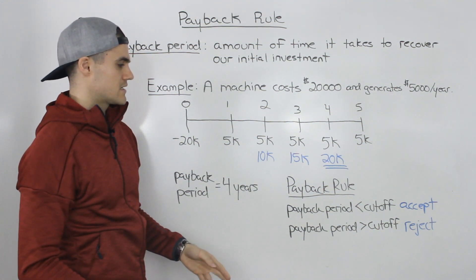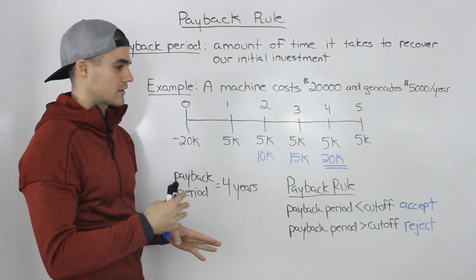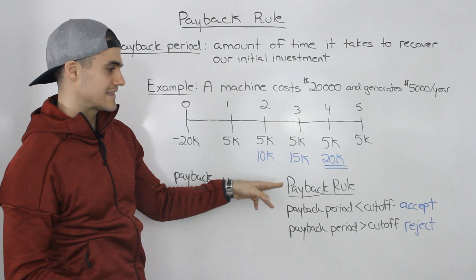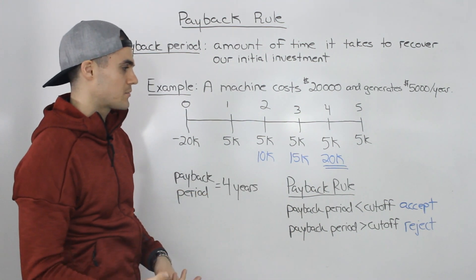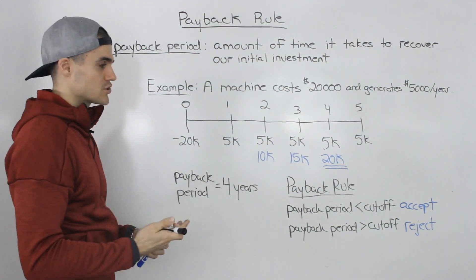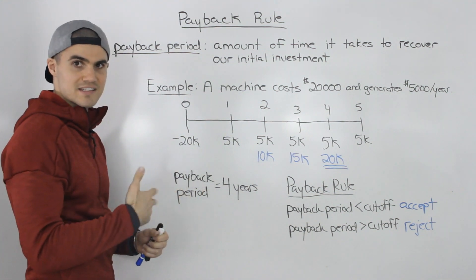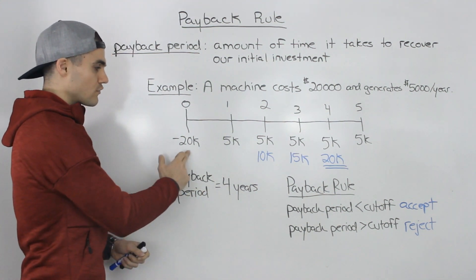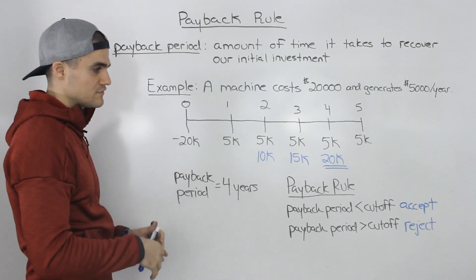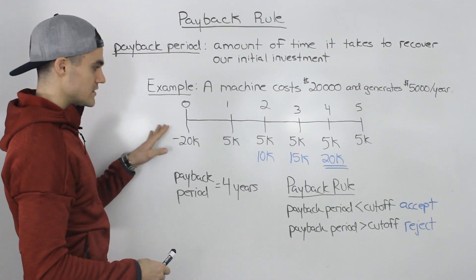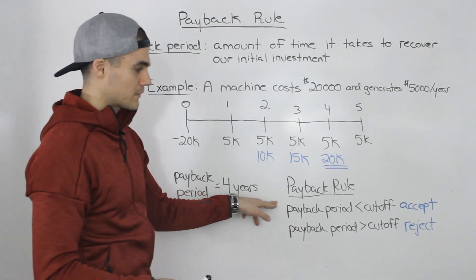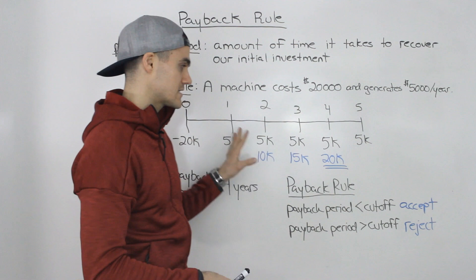The payback rule requires us to take the payback period and compare it to a cutoff the company has given. If the payback period is less than the cutoff, we accept the project. For example, if the company says we only accept projects with a payback period of less than five years, then since this project has a four-year payback period — which is less than the cutoff — we would accept it.